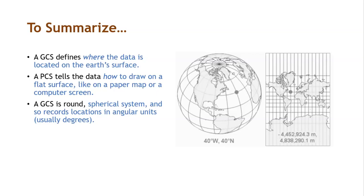A GCS is a round, spherical system and so records locations in angular units, usually in terms of degrees. A PCS is a flat, planar system so it records locations in linear units, usually in meters.